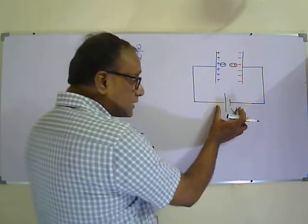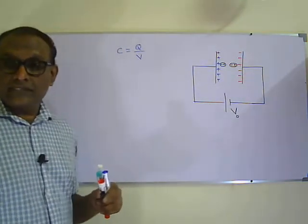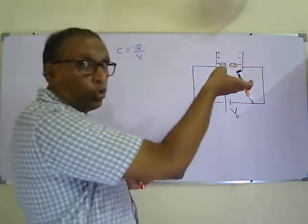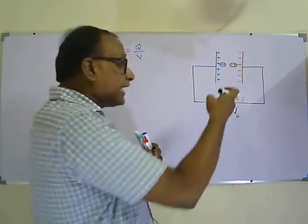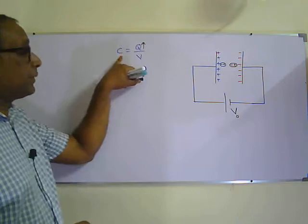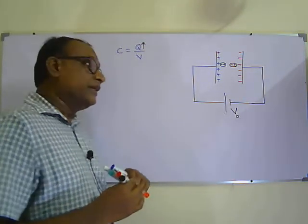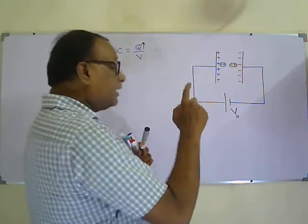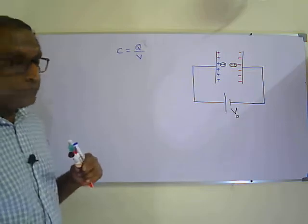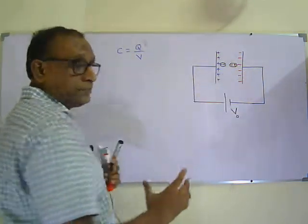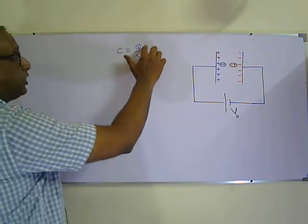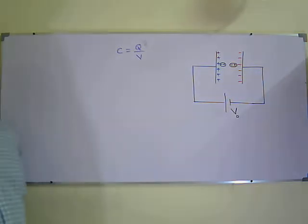When the voltage drops but the capacitor is still connected to the DC power supply, the battery will try to maintain the same voltage. So the battery will charge the capacitor more. When the capacitor is charged more, Q will increase. For the same voltage, Q increases, so the capacitance will also increase. Whether the battery is removed — where charge stays constant and voltage drops — or the battery remains connected — where voltage stays constant and Q increases — either way the capacitance of the capacitor will increase.